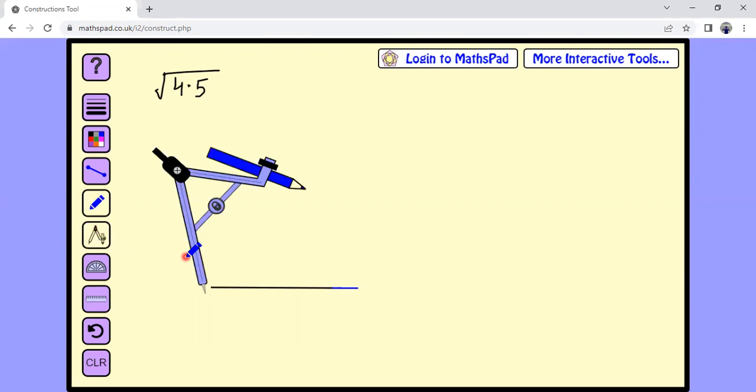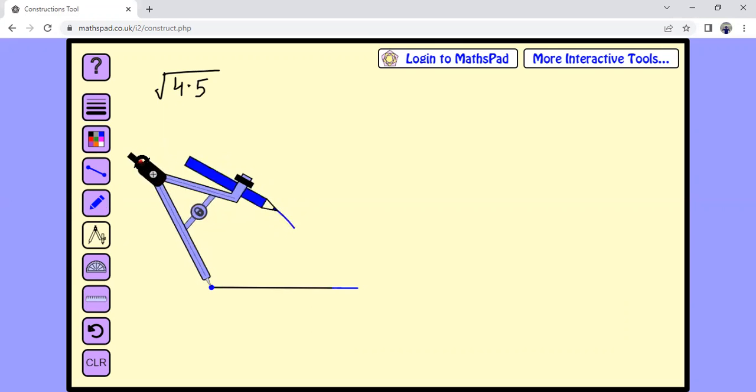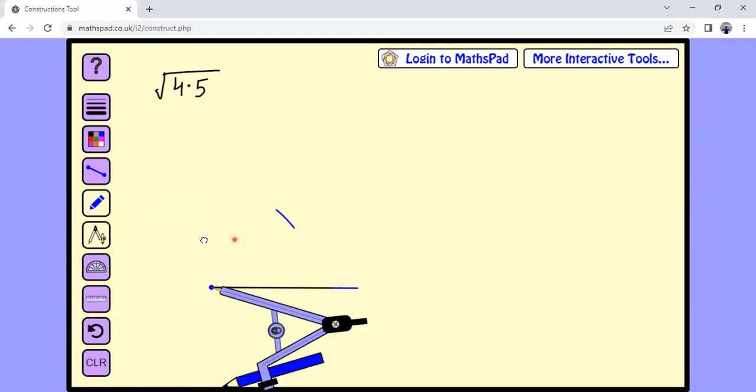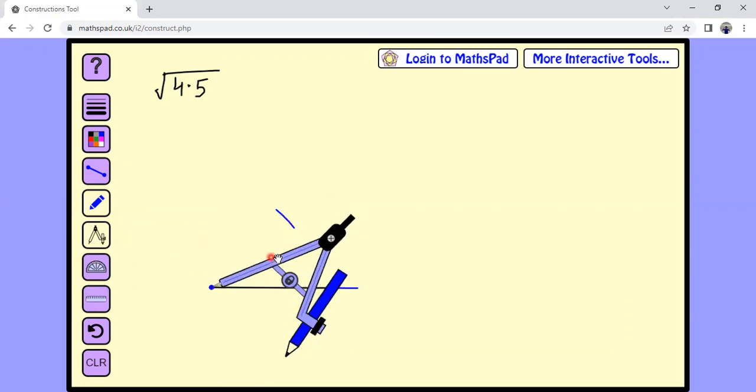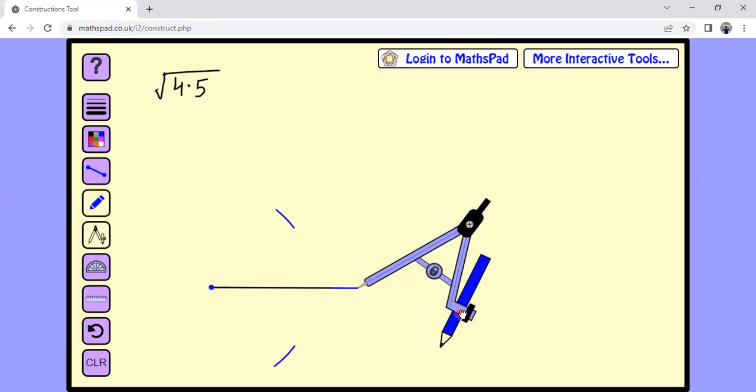Now we will take perpendicular bisector of this line segment. I would rather say the extended line segment, so more than half and the same more than half arc will be down there from this point.